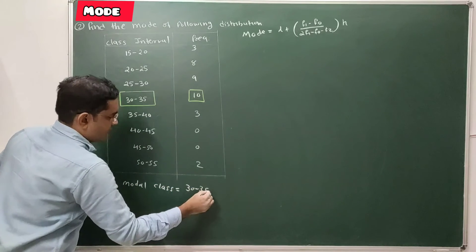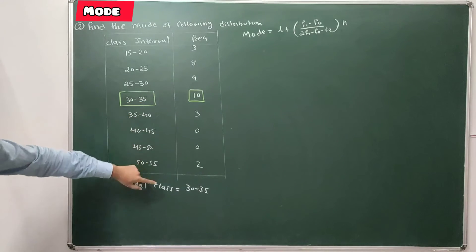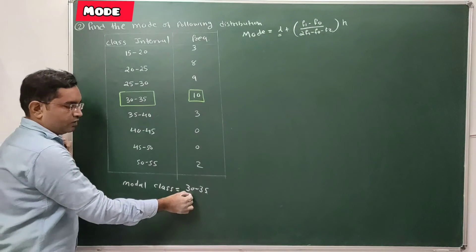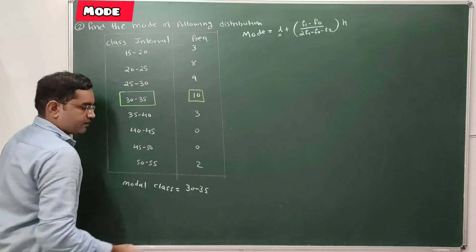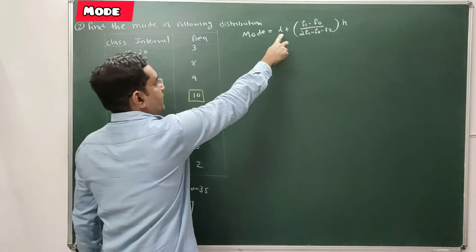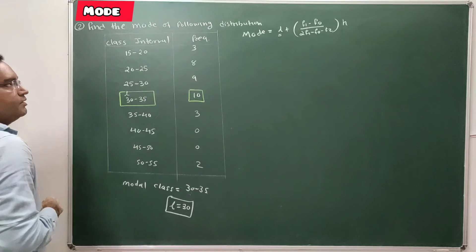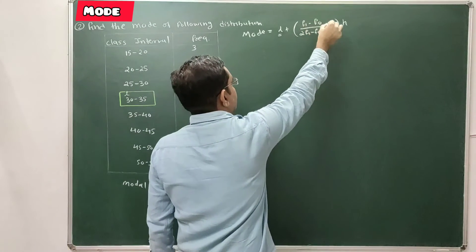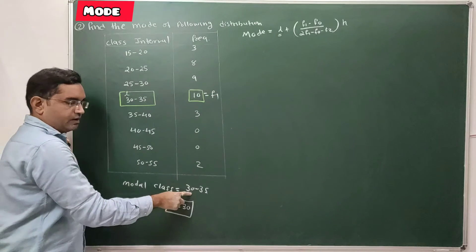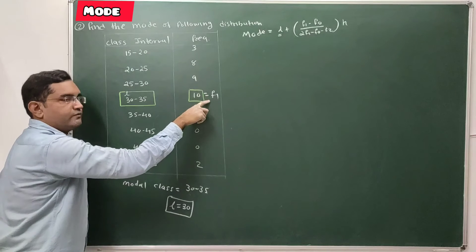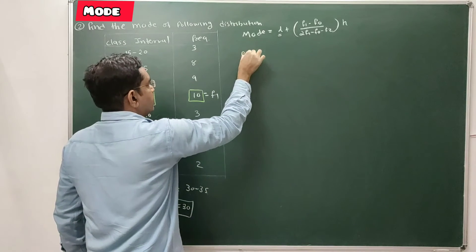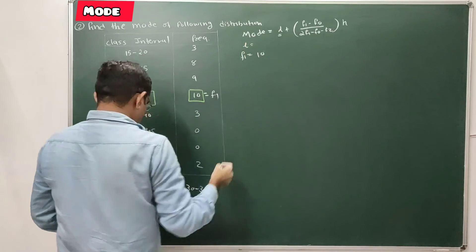The modal class is 30 to 35. L is the lower class limit of this modal class, so L equals 30. F1 is the frequency of the modal class, which is 10.